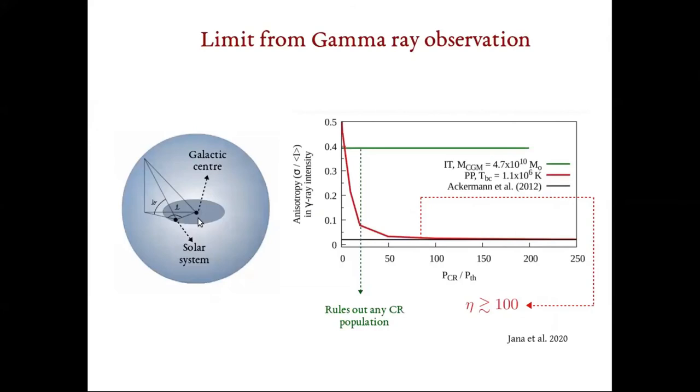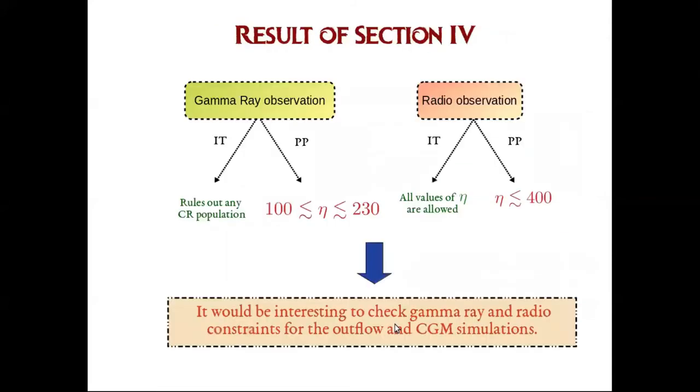But, the off-central position of the solar system in the Milky Way gives rise to an anisotropy in the gamma-ray flux. The anisotropy, when compared to the observed value, says that eta should be greater than 100 for the precipitation model and it rules out any cosmic ray population for the isothermal model. This was a really interesting exercise and I'd like to check the outflow and CGM simulations in the light of these constraints.